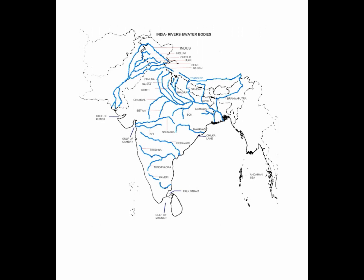Moving towards the western side, near Gujarat between river Narmada and Tapi, there is Gulf of Cambay (C-A-M-B-A-Y). Further in Gujarat, looking at the state boundaries, there is another gulf towards the north of Gulf of Cambay — that is Gulf of Kutch. So the three gulfs are Gulf of Mannar, Gulf of Cambay, and Gulf of Kutch. We also have Palk Strait, Chilka Lake, and the Andaman Sea — which you mark to the right of Andaman and Nicobar Islands.